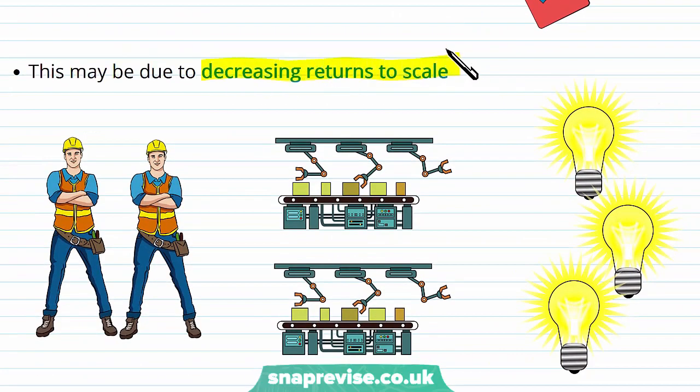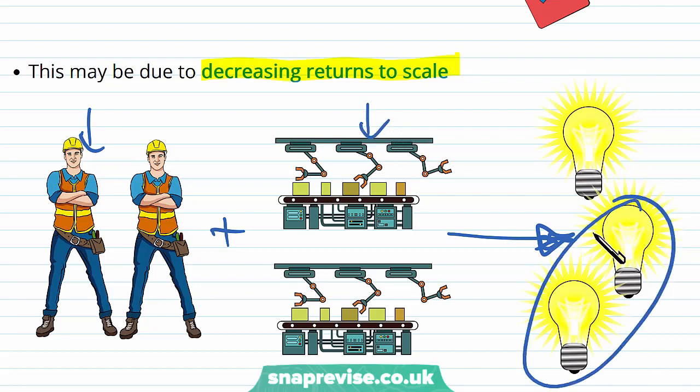Decreasing returns to scale is the case where we have doubled our inputs or tripled our inputs, but as a result we have had less than double of the output. So we are not increasing our output in proportion or more than proportion. Say when we just had one worker and just one machine we produced two light bulbs, but then we've added this second worker and this second machine and now we've only produced three light bulbs as a result.